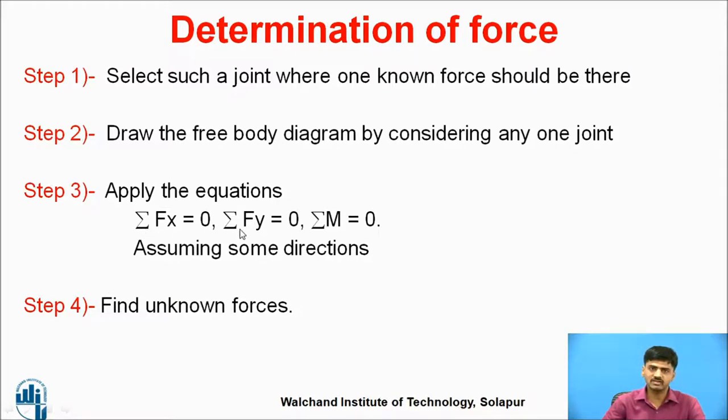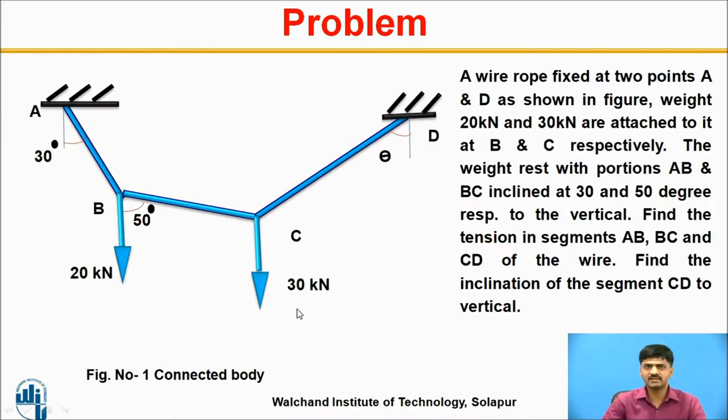Next, apply the equilibrium equation by considering the directions: summation Fx equals zero, Fy equals zero, and moment at any point equals zero. Consider all right-hand side forces positive, clockwise rotary effect positive, vertical upward force positive. Vice versa: downward force negative, left-hand side forces negative, anticlockwise rotary effect negative. Then identify the unknown forces.